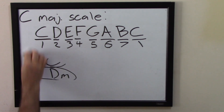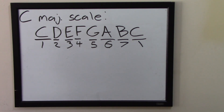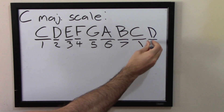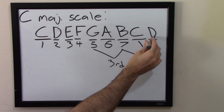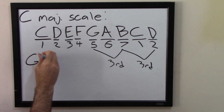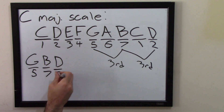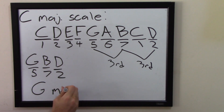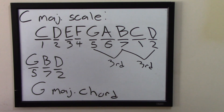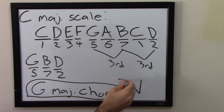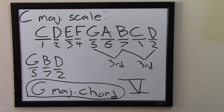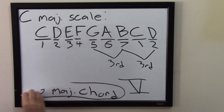Let's keep rolling. Starting on the 5th degree of the scale, you get the 5th, then the 7th — because you skip the 6th — and then a third up from the 7th brings you back to the 2nd, because after 7 is 1 where the scale starts over. So starting on the 5, you get 5, 7, 2. In the key of C, that's G, B, and D, which is a G major triad. In the key of C, we represent this with a capital Roman numeral V.